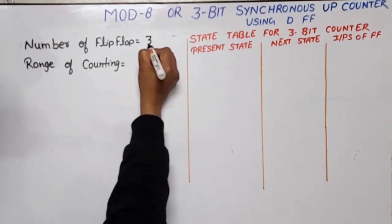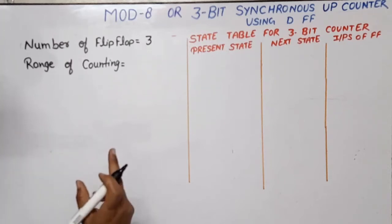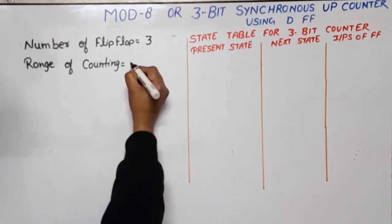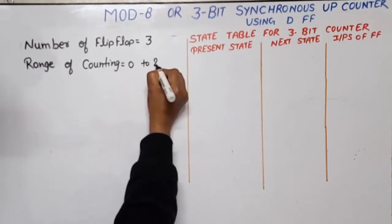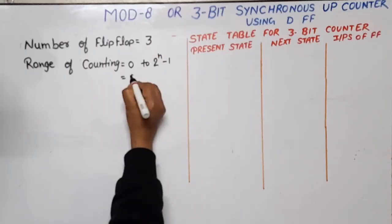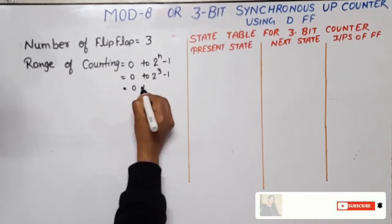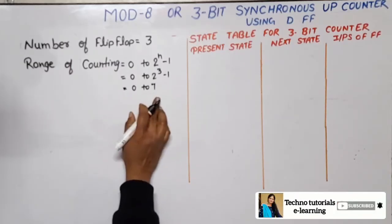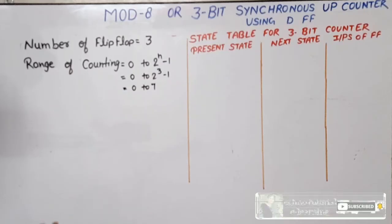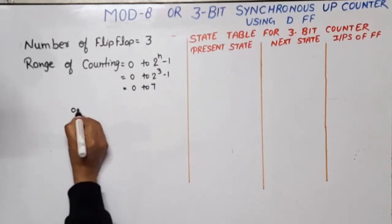So the number of flip-flops will be 3. Now for the range of counting: if there are 3 bits, the maximum value is 2 raised to power 3. Since this is an up counter, it will count from 0 to 2^n minus 1, where n is 3, so 0 to 7 — that is 8 states. That is why this is called a Modulus 8 counter, which can count 8 different states.